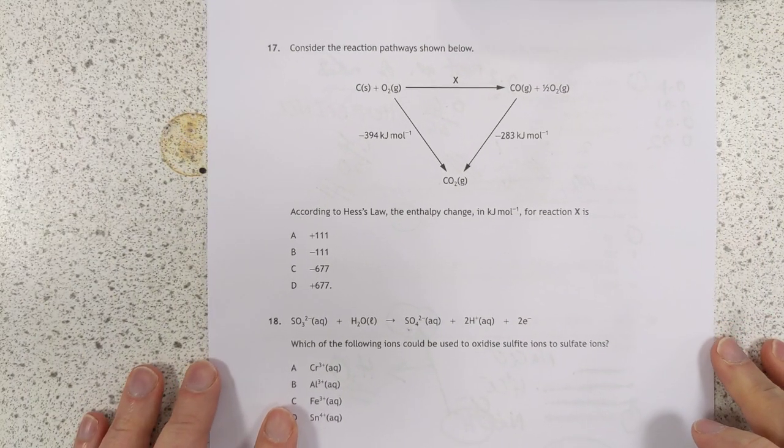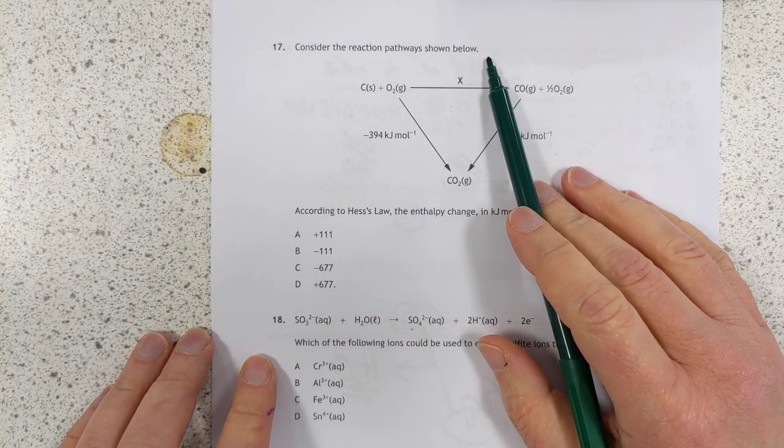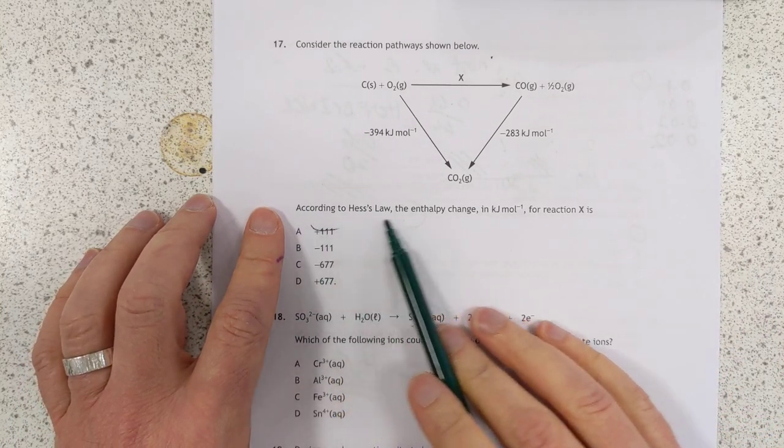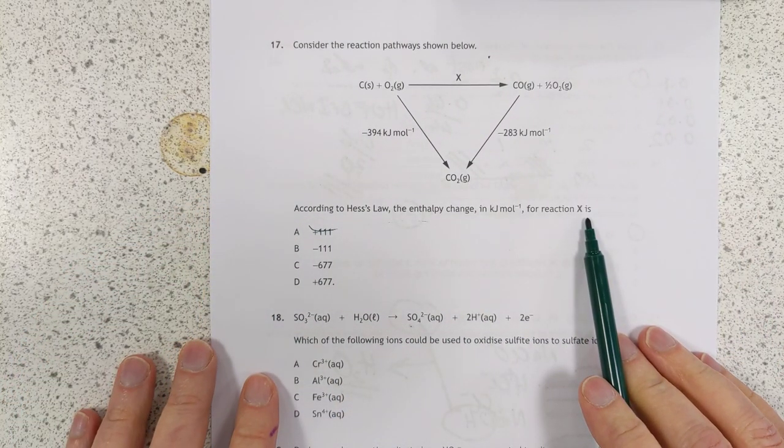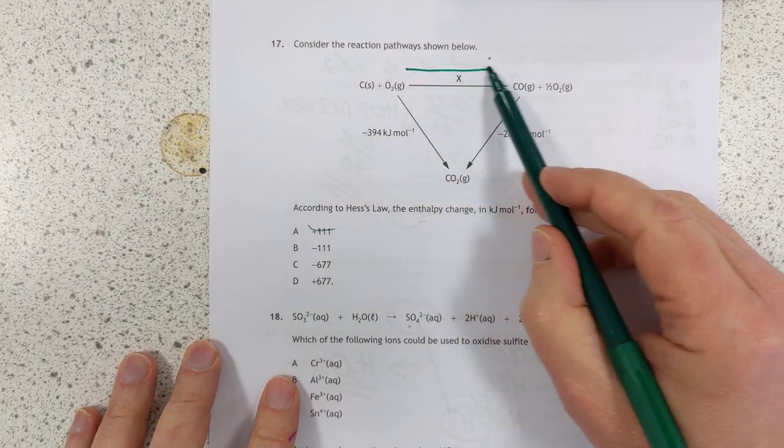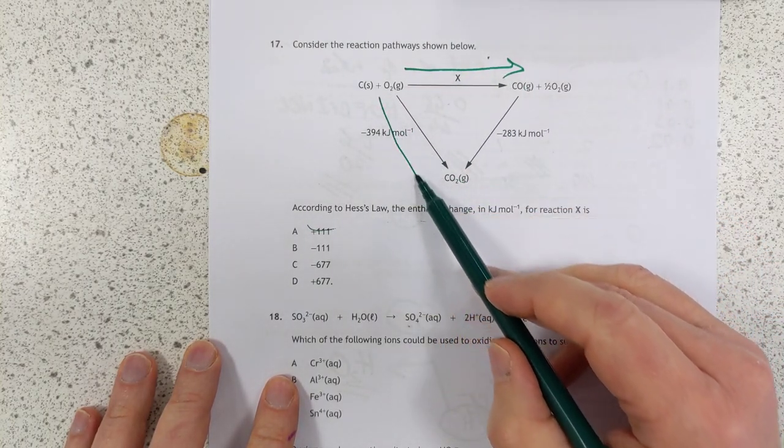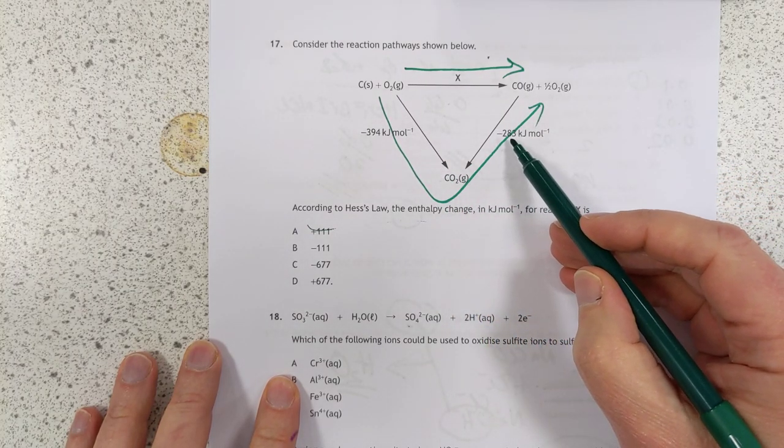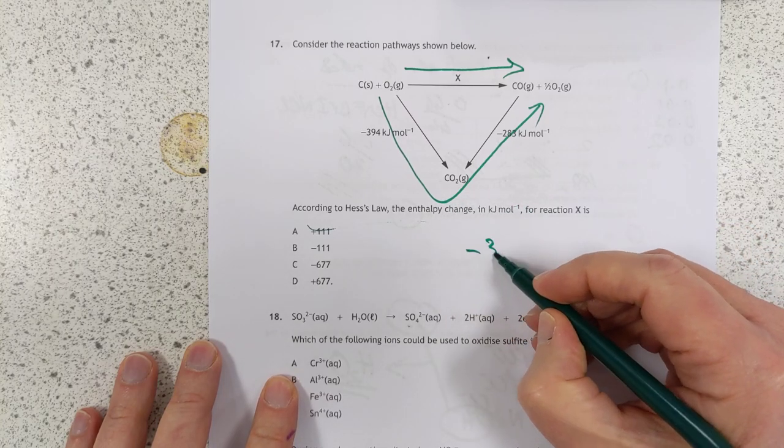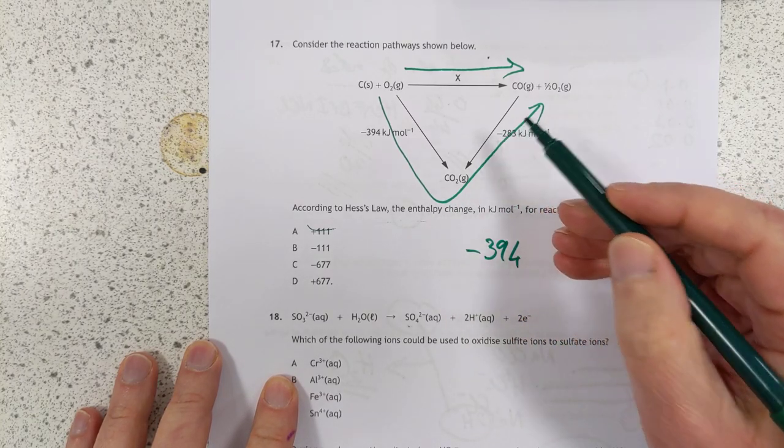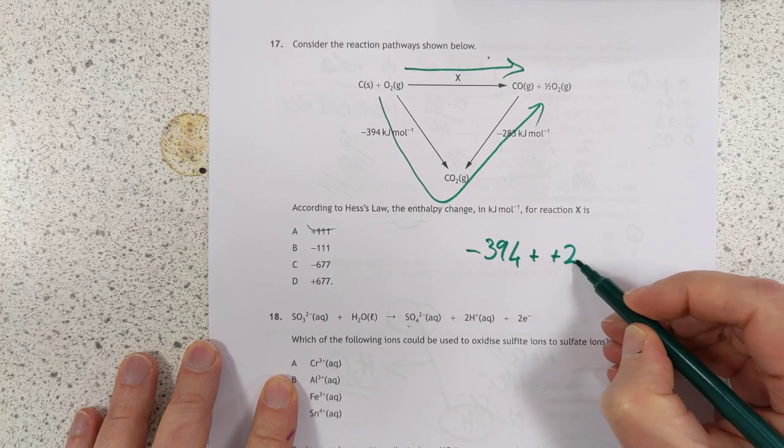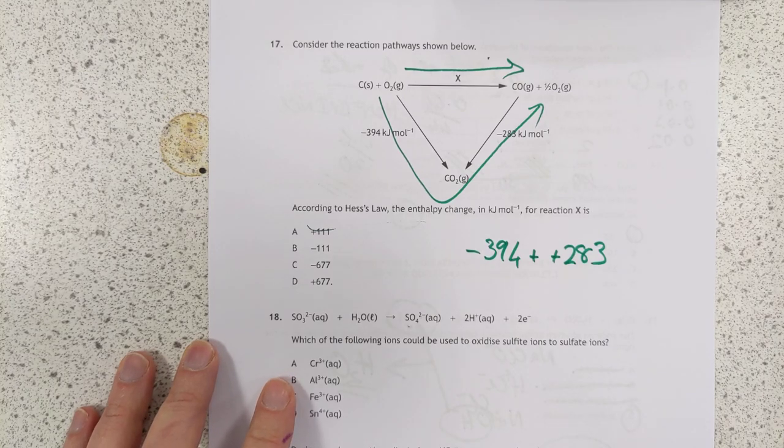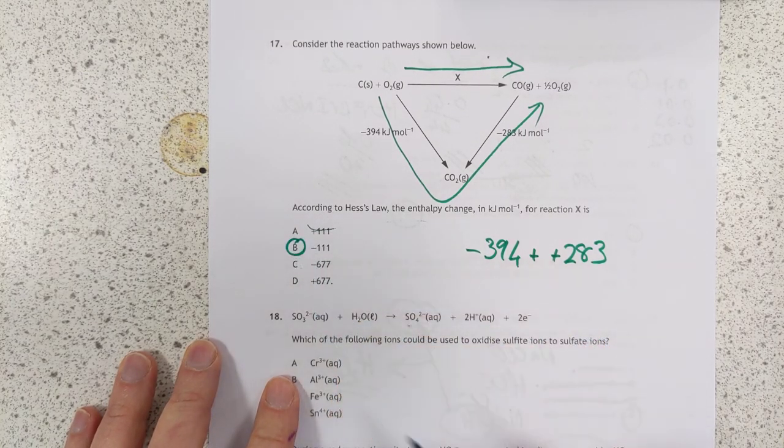Number 17. Consider the pathways shown below. Let us take 10 minutes out of our exam to consider the pathways. Let's not. According to Hess's law, the enthalpy change for reaction X. So we're going from here to here. So we're going round the houses this way. You notice we're going with this arrow, but against that arrow. So it will be negative 394, and then we need to flip that. So we'll add positive 283. It's going to be minus 111. So the answer is going to be B.